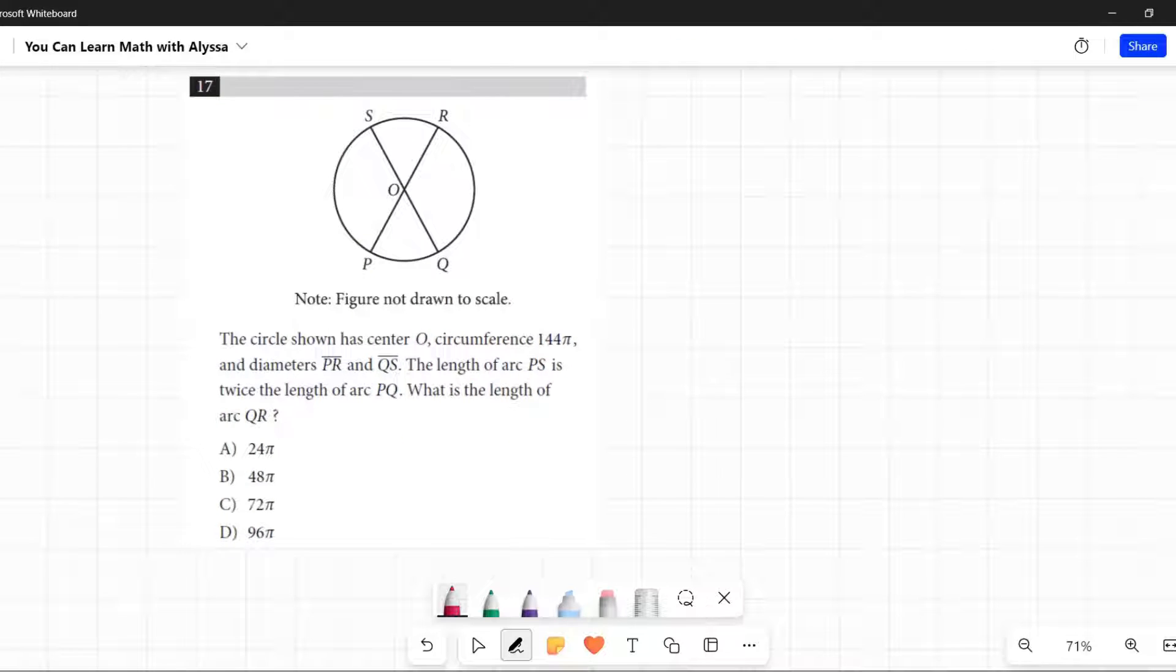Number 17. Note: figure not drawn to scale. It means we can't measure it and try to figure it out that way. We have to do the math.